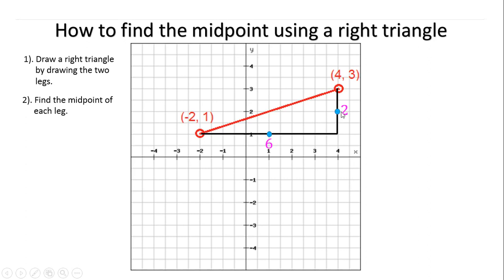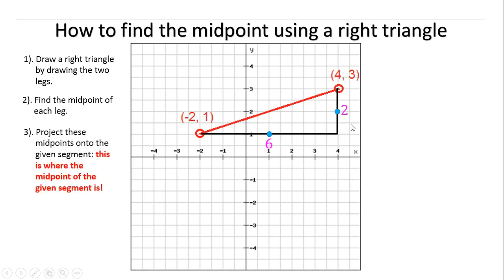Once you have the 2 midpoints of the legs, you will now go to the third and final step in this method. You project the locations of these midpoints onto the given segment. The first one, the location is at 1. The second one, the location is at 2. So my midpoint for the given segment is at 1, 2.